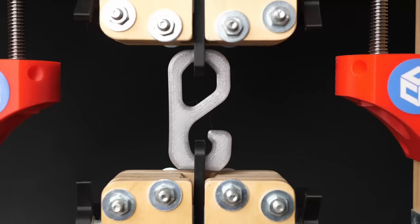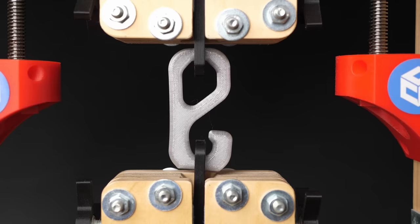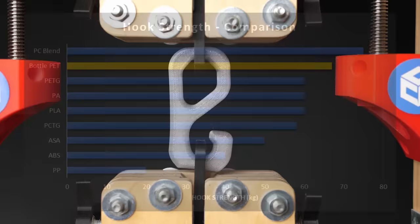Next, I tested my hooks, representing a more realistic part and loading scenario. The one printed lying failed at 67 kg, making it the second strongest material I tested here.